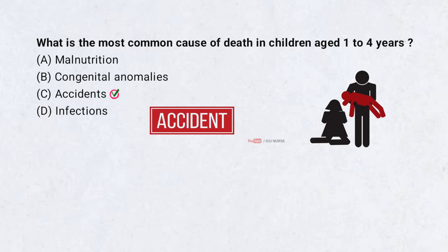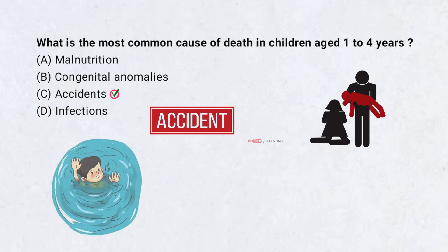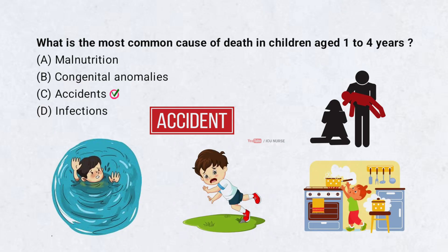Accidents, especially unintentional injuries, are the most common cause of death in children aged 1 to 4 years. These include drowning, falls, and burns. Children in this age group are curious and mobile but lack danger awareness. Supervision and safety measures can prevent many of these deaths. Education of caregivers is key.